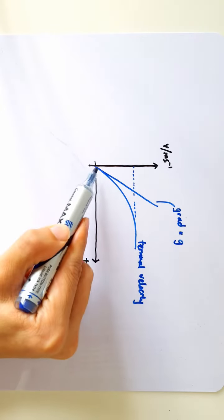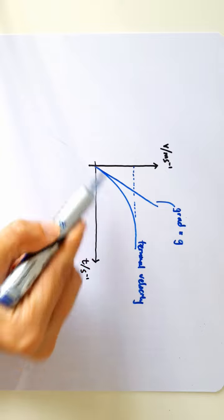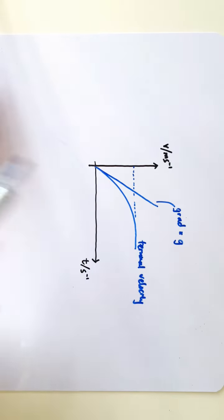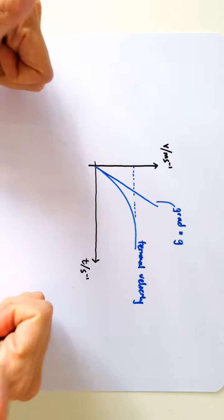What we have to do is draw the tangent to this curve at this point here and then calculate the gradient of that tangent. That will give you the acceleration of free fall, which is equal to the gravitational field strength.